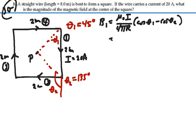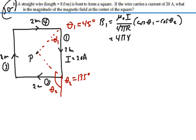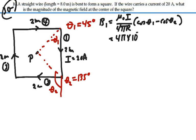So this would be equal to 4 pi times 10 to minus 7 times the current, which is 20 amps over 4 pi.